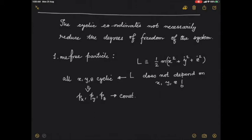Since it's a free particle, no force is acting and its momentum should not change — rate of change of momentum is zero. We'll look at the central force example and see that several things are constant, and for some of them a cyclic coordinate can be identified. In this free particle case, though the coordinates are all cyclic, the degrees of freedom is still three.